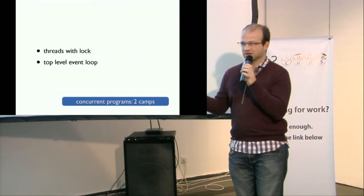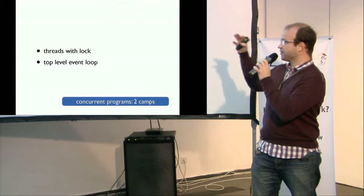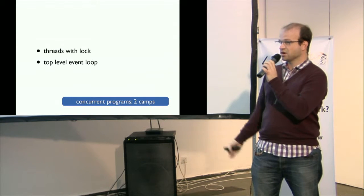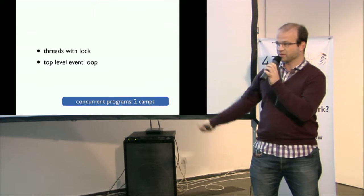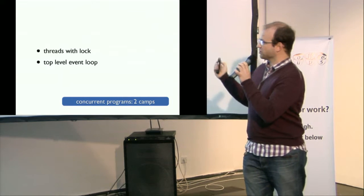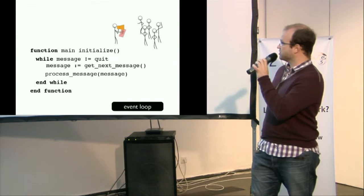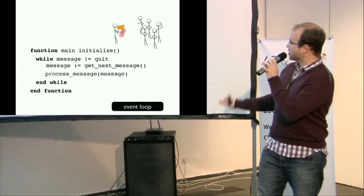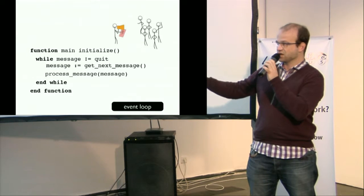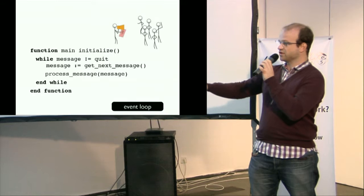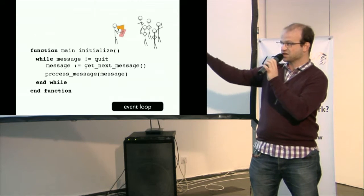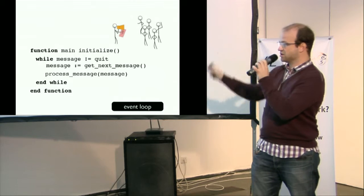Today we have two camps in concurrent programming. We have people doing concurrent programming with threads and locks, and people doing concurrent programming with event loops. I'm sure you already know what a thread is, so I will just talk about an event loop. An event loop is just a way to pass messages. At the bottom, it's a giant loop waiting for a message, processing the message, and getting the next message, etc.